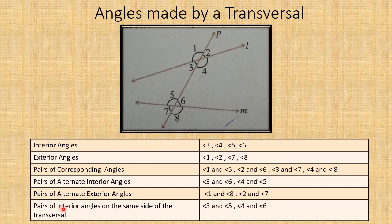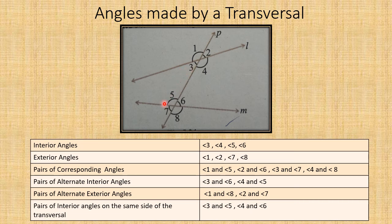Now, pairs of interior angles on the same side of the transversal. On the left side of the transversal, the interior angles are angle three and angle five. On the opposite side, we have angle four and angle six. These are called pairs of interior angles on the same side of the transversal.